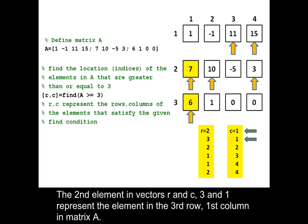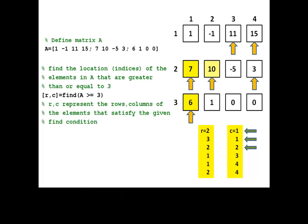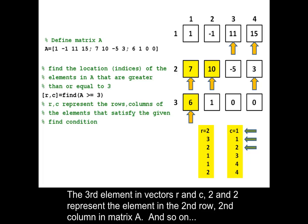The second element in vectors R and C, 3 and 1, represent the element in the third row, first column in matrix A. The third element in vectors R and C, 2 and 2, represent the element in the second row, second column in matrix A and so on.